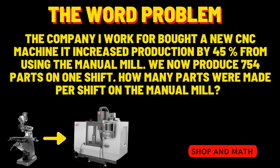The company I work for bought a new CNC machine. It increased production by 45% from using the manual mill. We now produce 754 parts on one shift. How many parts were made per shift on the manual mill?